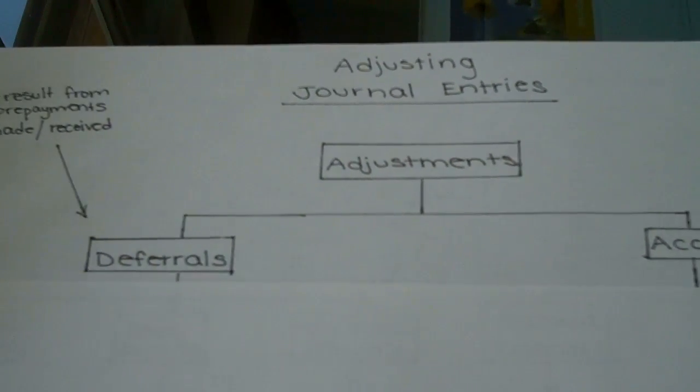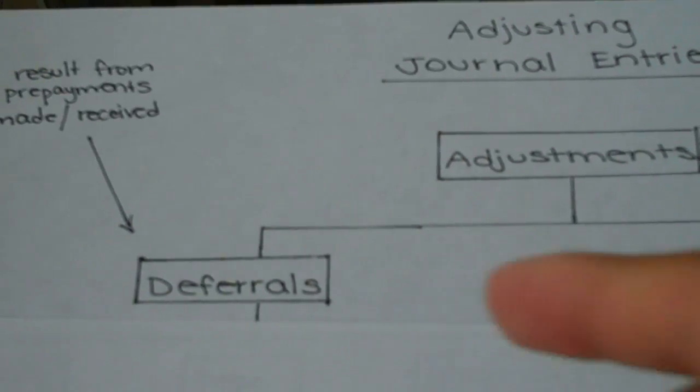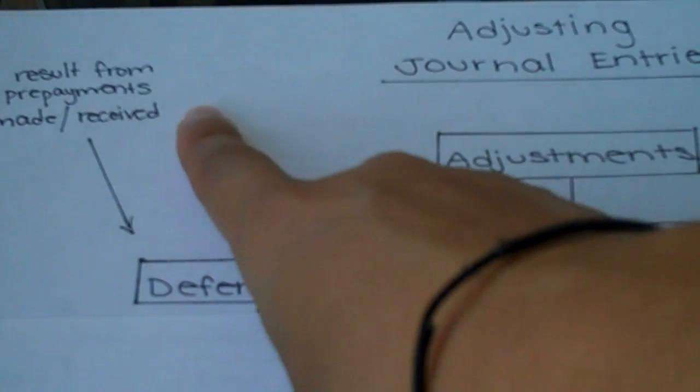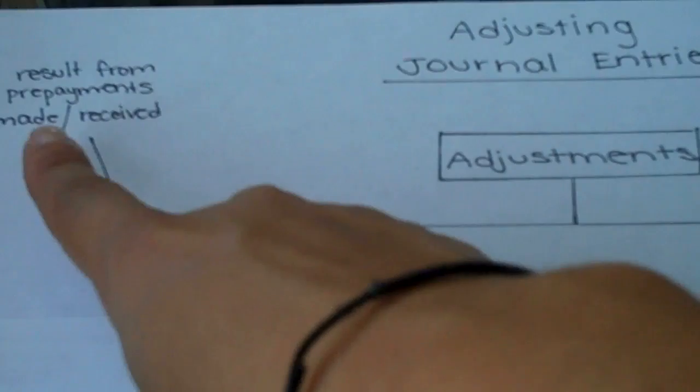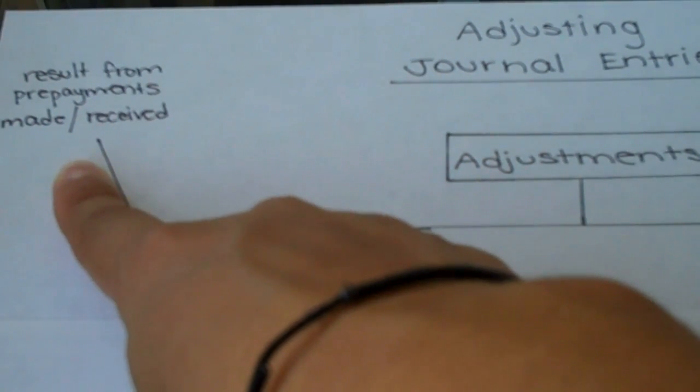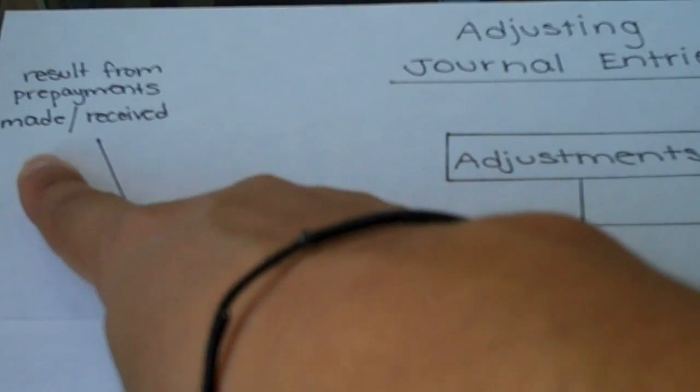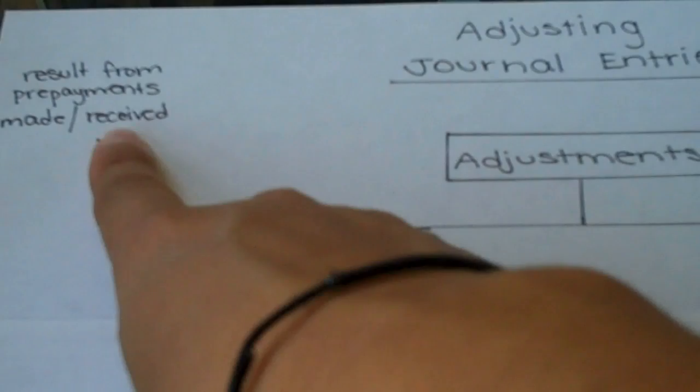What are deferrals? Well, deferrals are items that result from prepayments. These are prepayments that either the company has made, meaning perhaps they have paid in advance for an insurance policy or for six months' rent. So payments that the company has made or prepayments that the company has received.